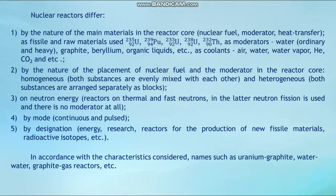Nuclear reactors differ: first, by the nature of the main materials in the reactor core — nuclear fuel, moderator, heat transfer. As special and raw materials: U-235, Pu-239, U-233, U-238, Pu-232 are used. As moderators: water (ordinary and heavy), graphite, beryllium, organic liquids, etc. As coolants: air, water, water vapor, helium, carbon dioxide, etc.